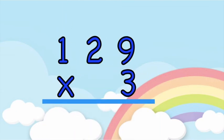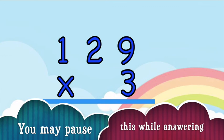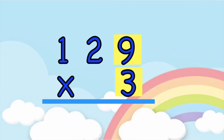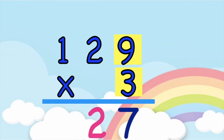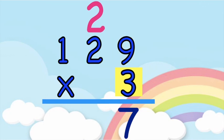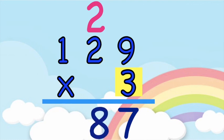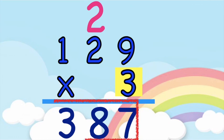How about if we have this: 129 times 3. Let's count: 3, 6, 9, 12, 15, 18, 21, 24, 27. So we have 27. Write 7 at the bottom, then carry 2 at the top of 2. Let's multiply the tens: 3 times 2 — 3, 6. 6 plus 2, that is 8. And then the hundreds: 3 times 1 — fantastic, it's 3. So the product of 129 and 3 is 387.